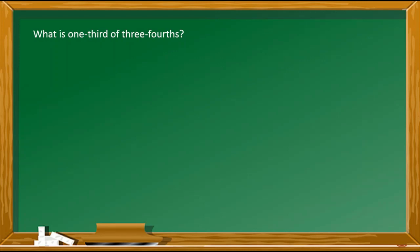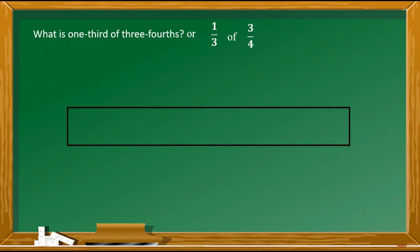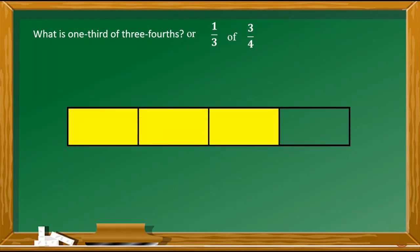Another one: what is one-third of three-fourths? Para ma-solve ang problem, una gagawa tayo ng isang bar or rectangle na nagre-represent ng one whole. Sunod, hahatiin natin ito sa apat na parte, at para makuha ang three-fourths, isishade natin ang tatlong bahagi nito — so that represents three-fourths.